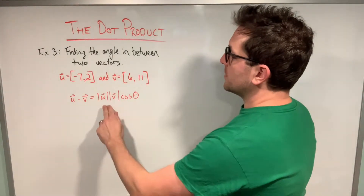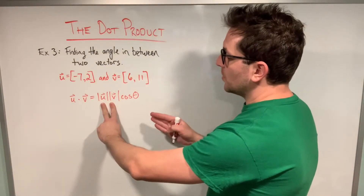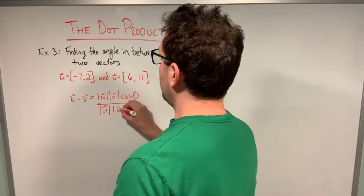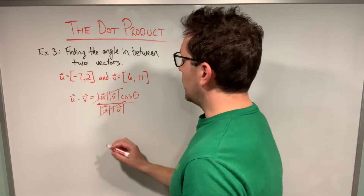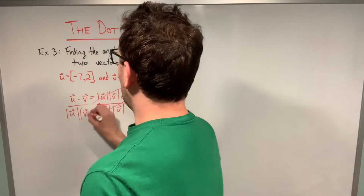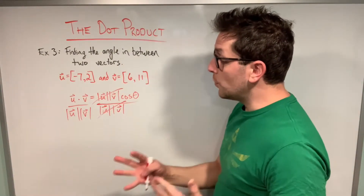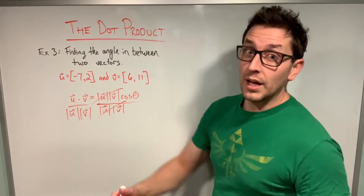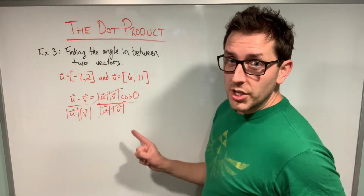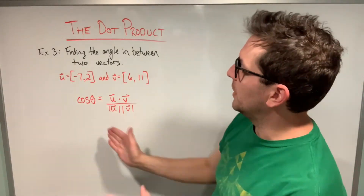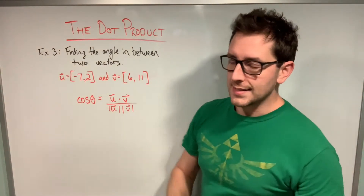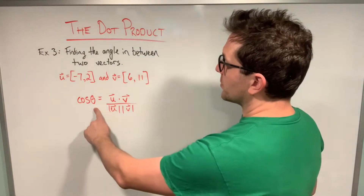To isolate theta, I divide both sides by the magnitude of u and the magnitude of v. Those magnitudes cancel on the right-hand side, giving a new variation of the formula: the dot product of the vectors in the numerator divided by the product of the magnitudes equals the cosine of theta. After cleaning up, I have cosine of theta on the left and the dot product divided by the product of the magnitudes on the right. Now I'm ready to solve for theta.